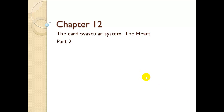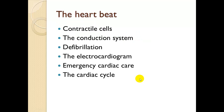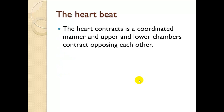This is Chapter 12 of the Cardiovascular System, the Heart, Part 2. In this section, we're going to talk about the heartbeat and how that actually occurs with contractile cells and a conduction system. We're going to talk about defibrillation, the electrocardiogram, emergency cardiac care, and the cardiac cycle.